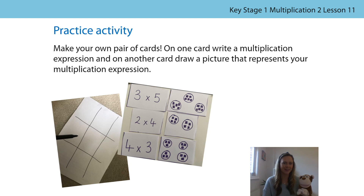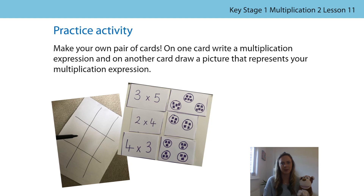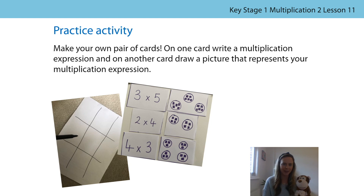Now it's time for your practice activity. I'd like you to make your own pair cards. On one card, write a multiplication expression, and on another card, draw a picture to represent that multiplication expression. If you made cards in a previous lesson with Mrs Behan, you can use those — but remember, this time we just need the cards with the multiplication expression and the pictorial representation. You're getting so good at this that I bet you want to make some more. You could play snap or a matching game with somebody at home. You've done some brilliant mathematics in this lesson, and Bongo and I are really proud of you. We hope to see you soon.